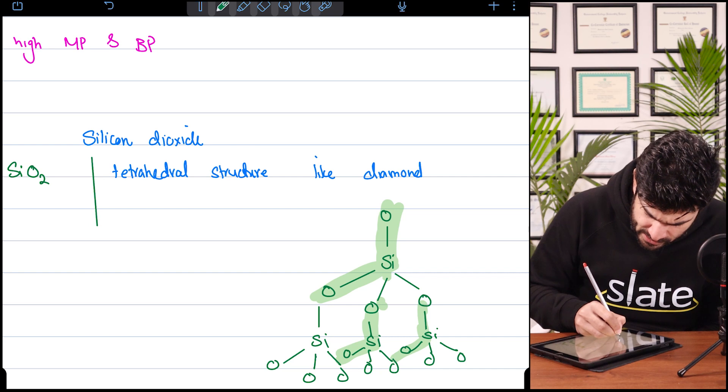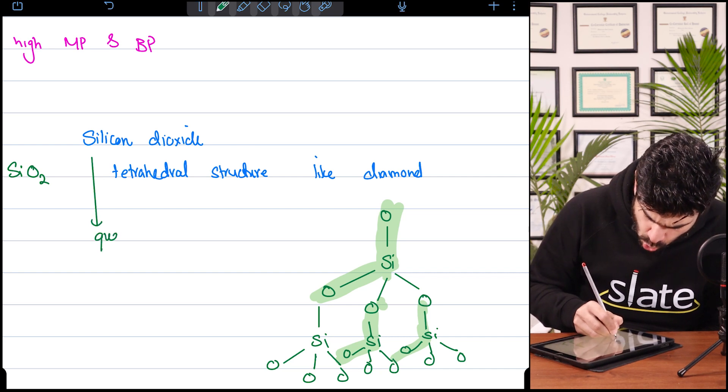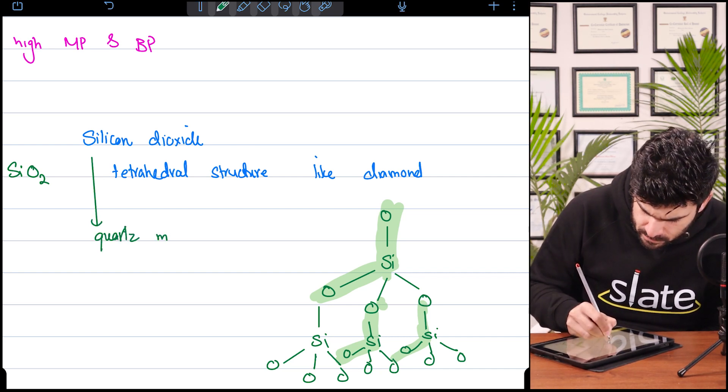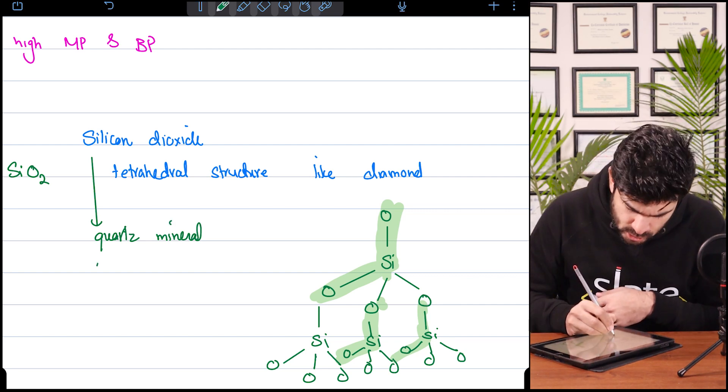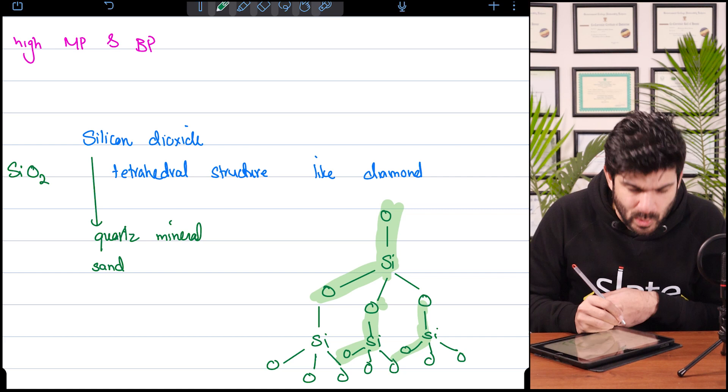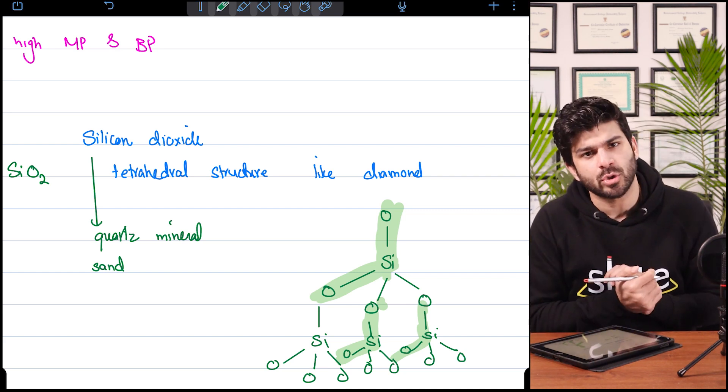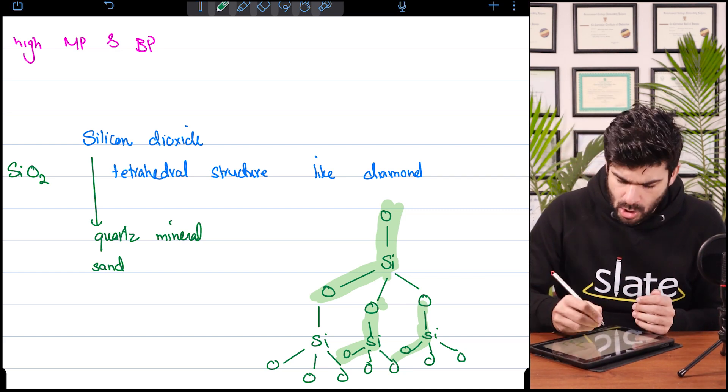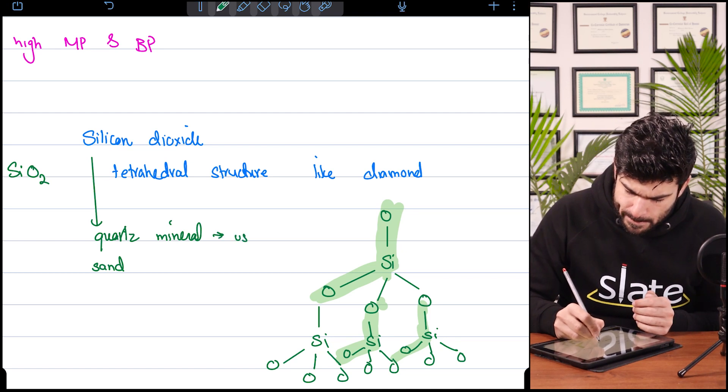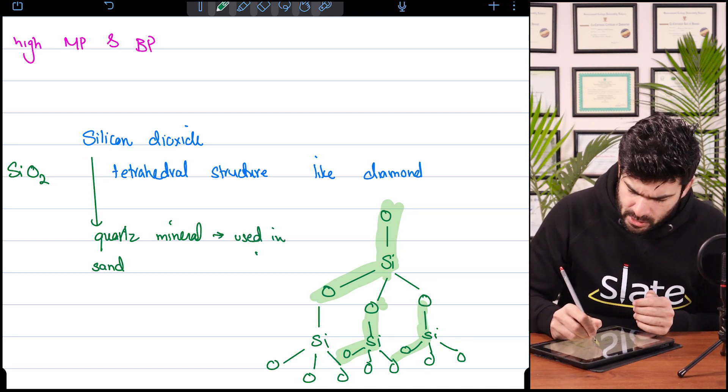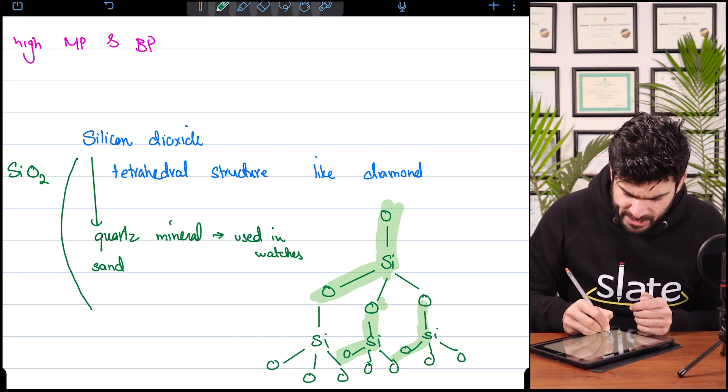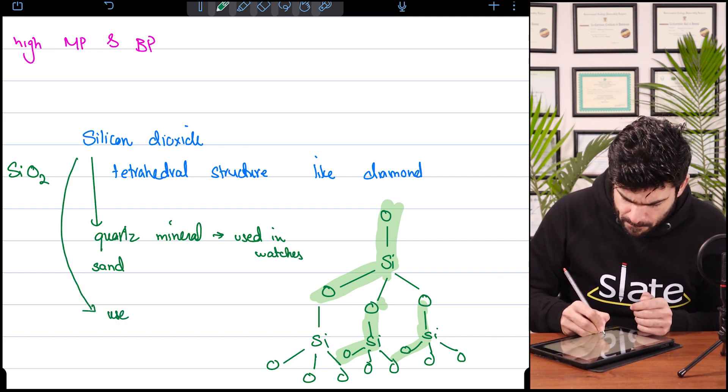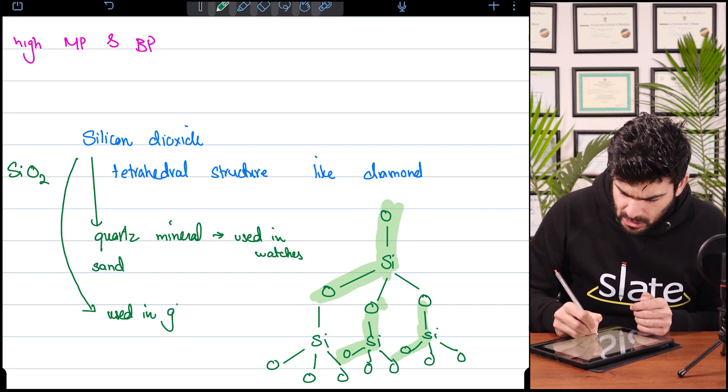Silicon dioxide is also called quartz mineral. Quartz mineral used in watches. This is also sand as well. Silicon dioxide is also sand. It has its uses. Even silicon dioxide is used in glass making.